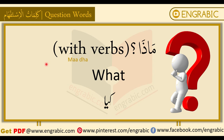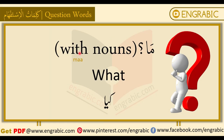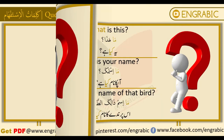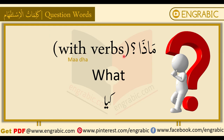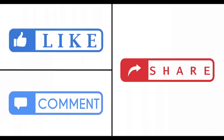Now we come to 'madha,' which also means 'what' and 'kya,' but it is used with verbs (fi'l). Previously, 'ma' was used with nouns (ism); 'madha' is used with verbs. For example: 'What are you doing?' — madha taf'alu — aap kya kar rahe hain. 'What do you see?' — madha tara — aap kya dekhte hain. 'What do you want to eat?' — madha turidu an ta'kula — aap kya khaana chahte hain. In all these sentences, taf'alu, tara, and ta'kula are verbs.